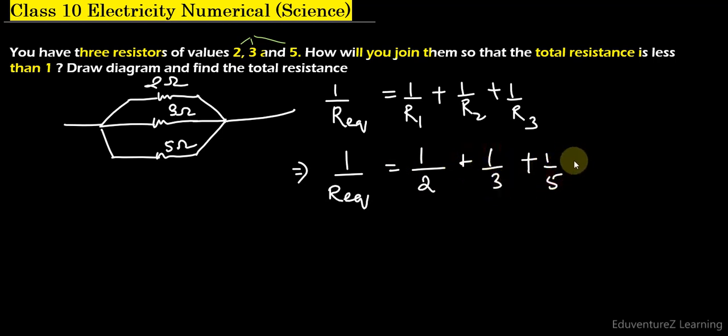Now we will take the LCM. So the LCM is 30. That gives us 2 into 15 plus 3 into 10 plus 5 into 6.